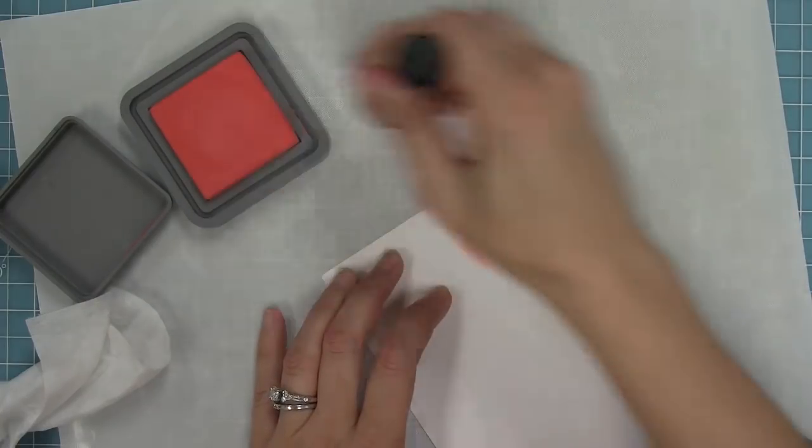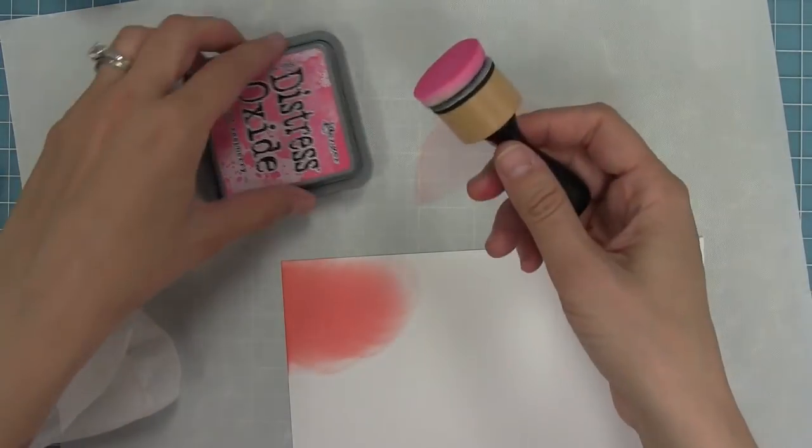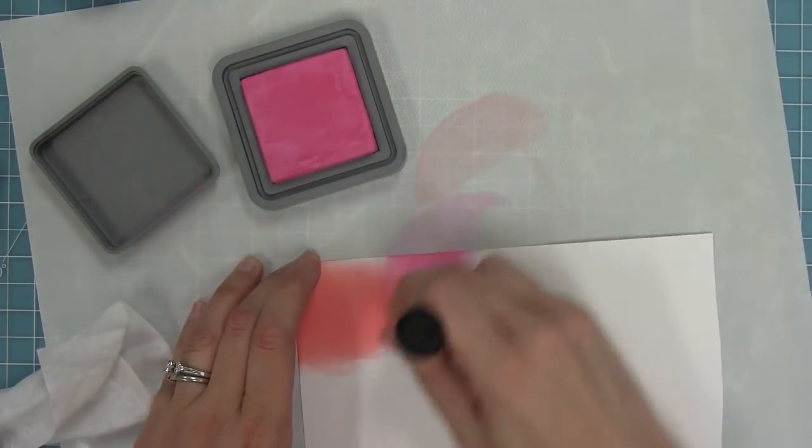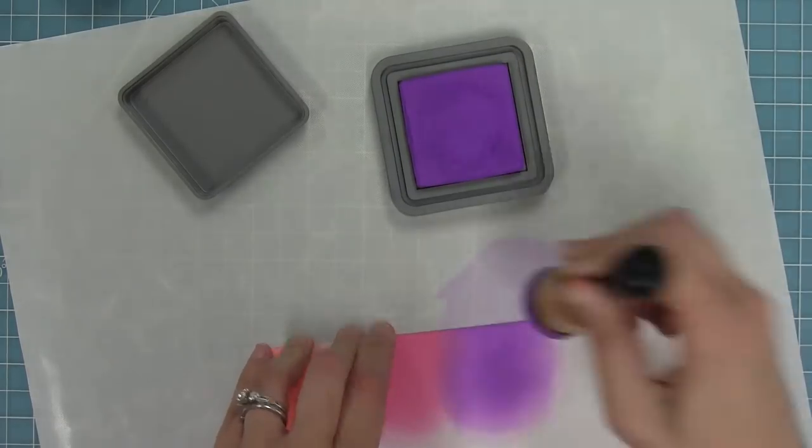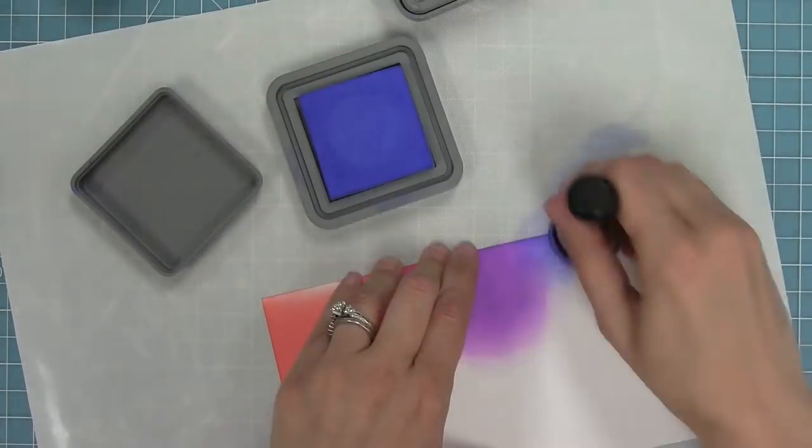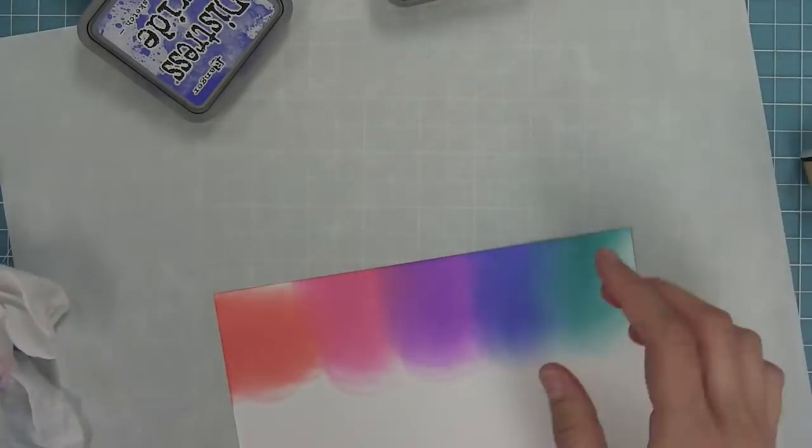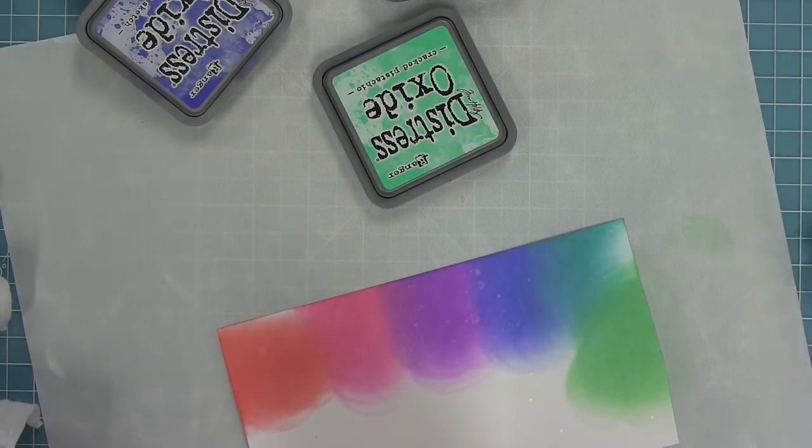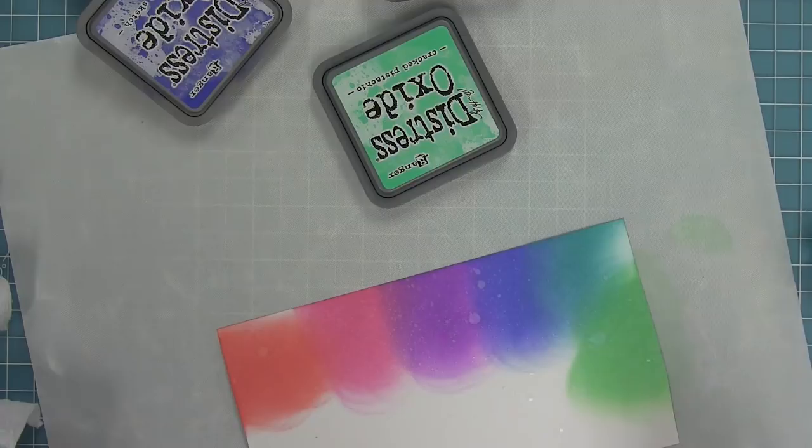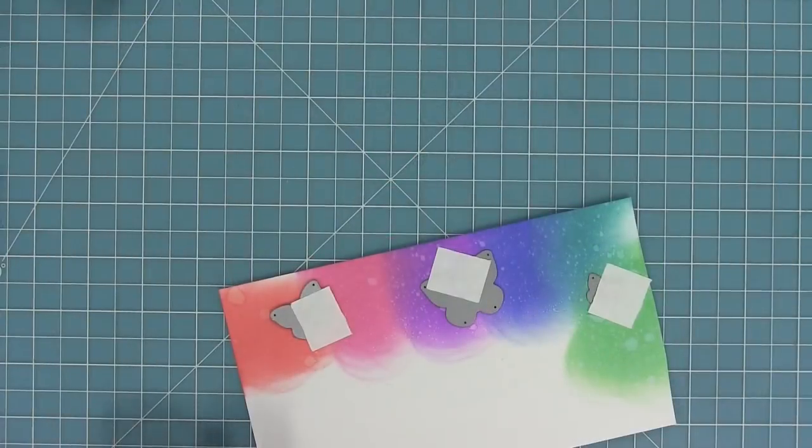Now I'm working on my butterflies and I want them to be from the distress oxides too, so I'm going to create kind of a little rainbow that I'm going to die cut my butterflies from. I'm going to do abandoned coral and then switch over to my picked raspberry, overlapping those colors just a bit. Then next I'm going to work on my wilted violet. After that I'll go into some blueprint sketch, then peacock feathers, and then cracked pistachio. I'm creating just a little rainbow, sort of overlapping the colors, and then I'm going to spray it with that same technique. I'm going to die cut my butterflies from it where the colors overlap so that all of the butterflies kind of have a cool different look.